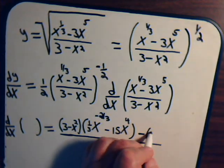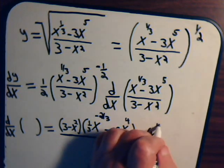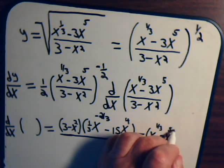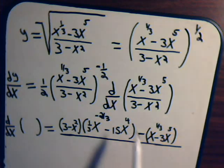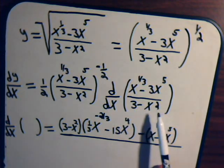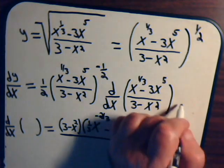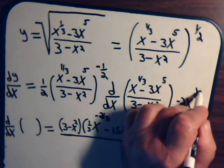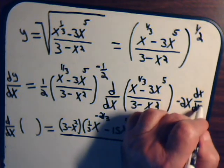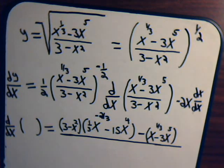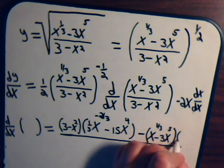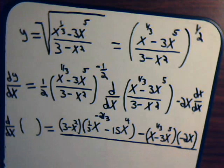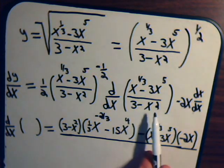Then it's minus the numerator times the derivative of the denominator. So we have x to the 1/3rd minus 3x to the 5th. The derivative of the denominator 3 minus x squared is minus 2x. This is all divided by the denominator squared.